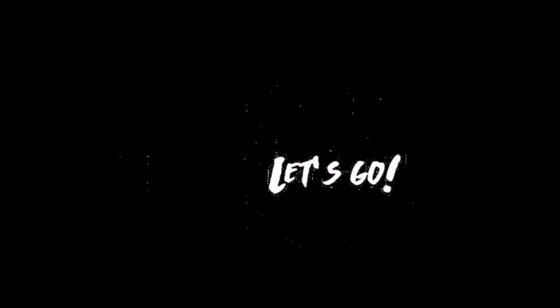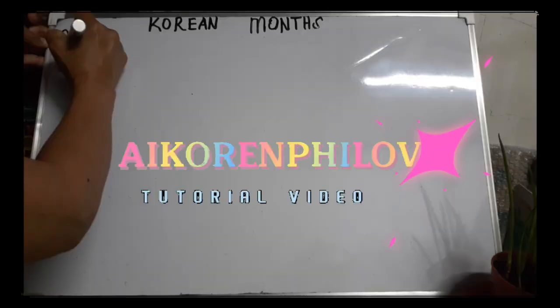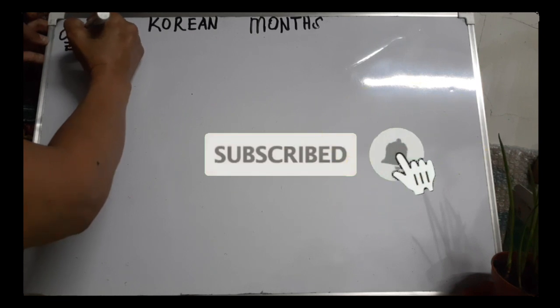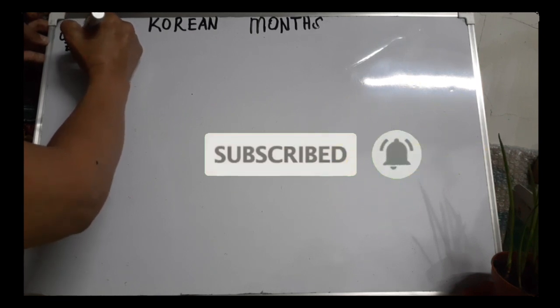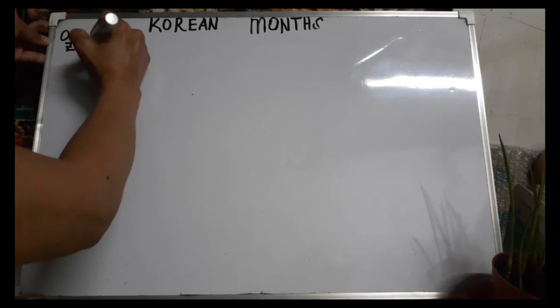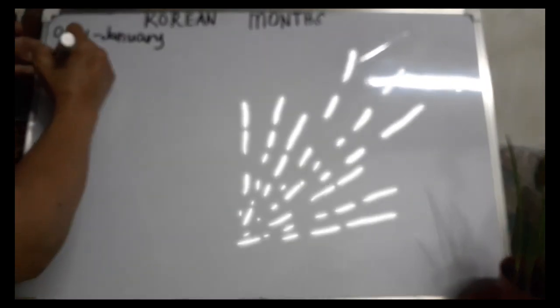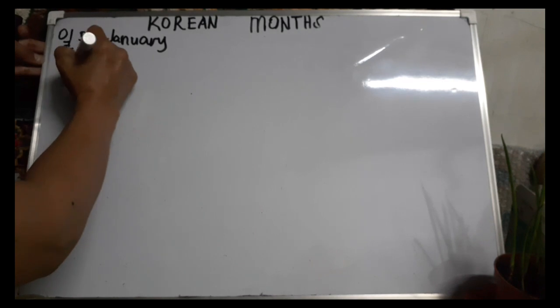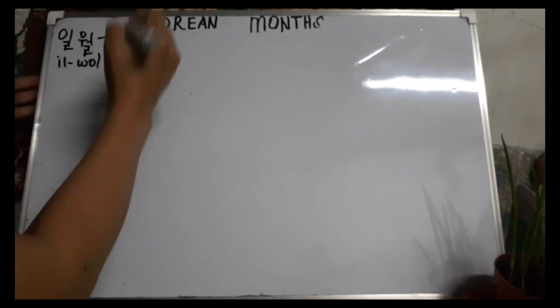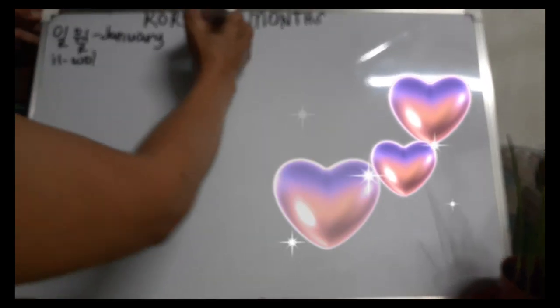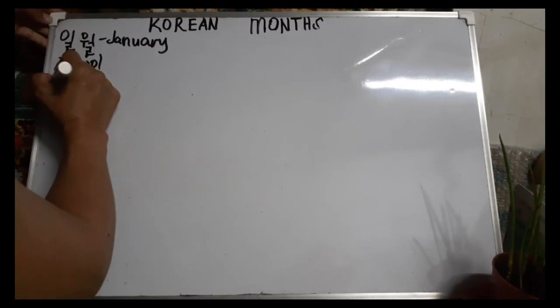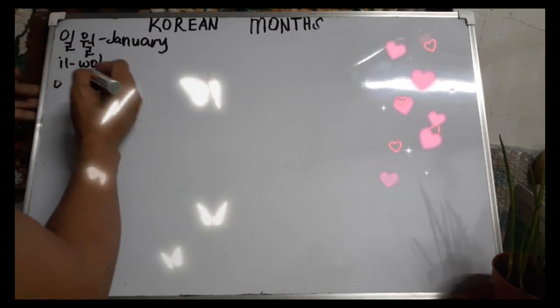Let's get started with the Korean months. January. January, January. February, February, February.